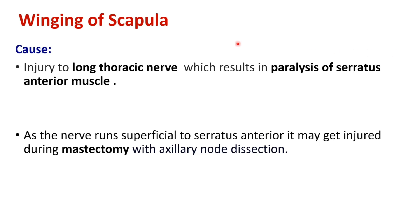The cause of winging of scapula is injury to the long thoracic nerve, resulting in paralysis of the serratus anterior muscle. This may occur during mastectomy when axillary node dissection is done along with removal of the lateral part of the breast.